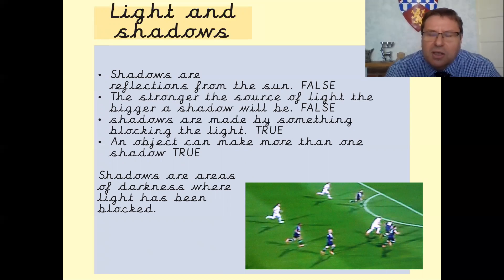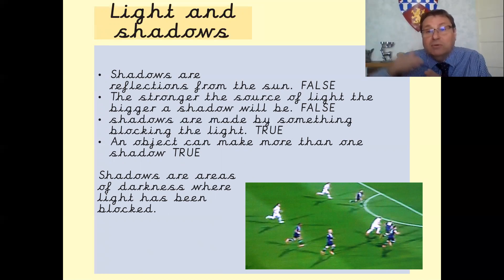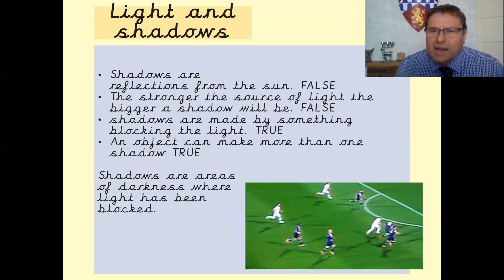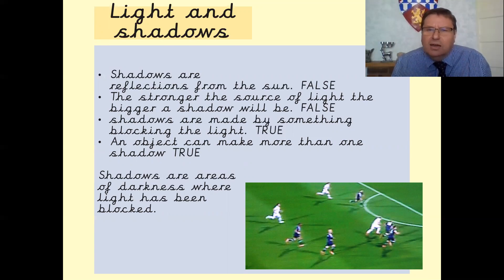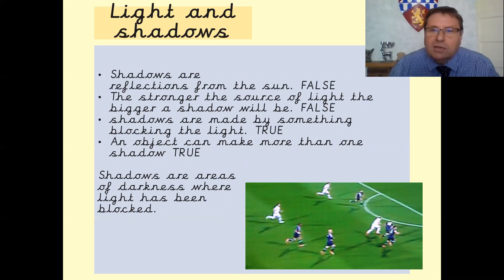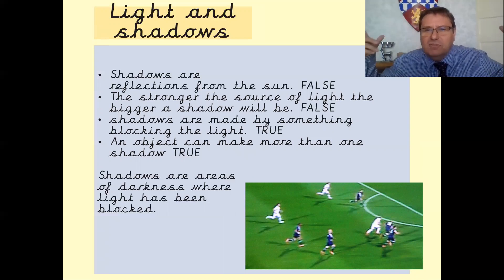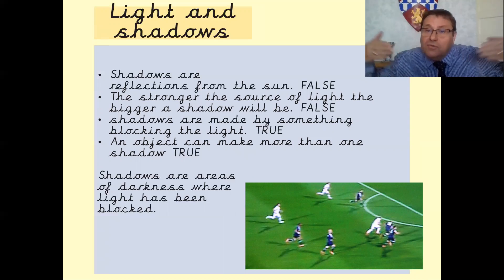Shadows are reflections from the sun — that's false, because shadows aren't reflections. They're where light has been blocked. Reflections are when things bounce off, so that's false. The stronger the source of light the bigger the shadow — I think that's false as well, because it doesn't matter how bright the light source is. Having a really bright source will make the shadow much darker, but it's certainly not going to make it any bigger. Shadows are made by something blocking the light — well that's true, that's what we've said. An object can make more than one shadow — that's true as well, because if you look at this picture of footballers playing in a stadium in the evening, there are four very strong lights on them, and as you can see that has created four different shadows for each player. So yes, you can have more than one shadow if you've got more than one light source.